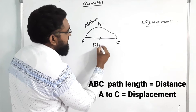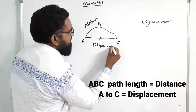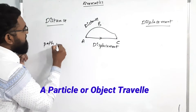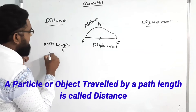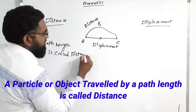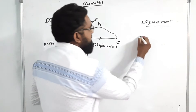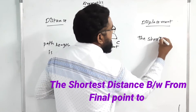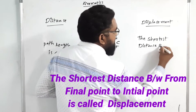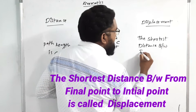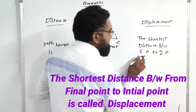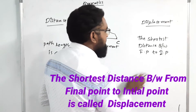A to C is displacement. So the definition: path length is called distance. And displacement is the shortest distance between final point to initial point — here initial point is A and final point is C. FP means final point to initial point.